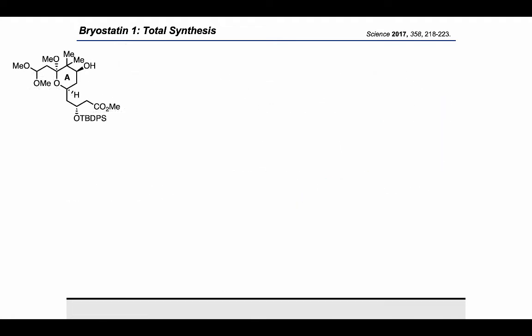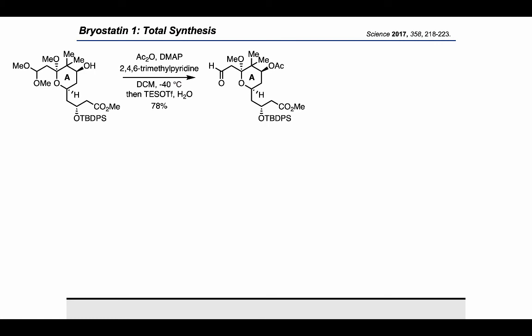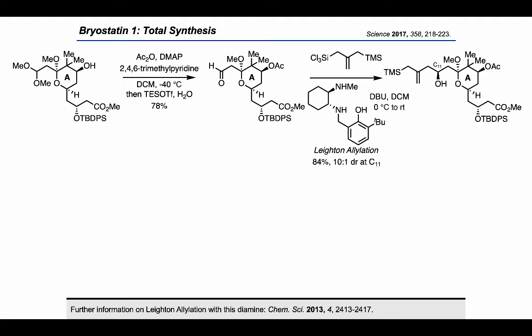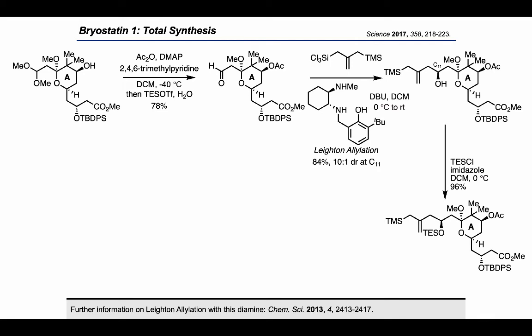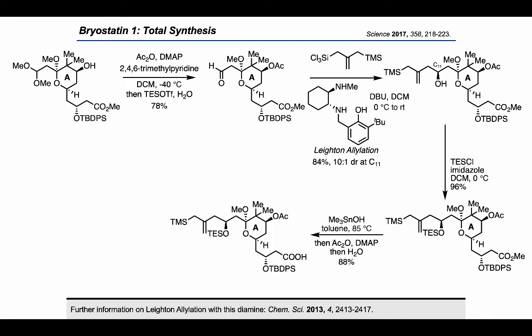Next, some protecting group manipulations: the secondary alcohol was acetylated, and the dimethyl acetal was deprotected to reveal the aldehyde. The authors then employed an allylation protocol developed by the Leighton group, using a chiral diaminophenol to control the stereochemistry of the secondary alcohol formed during the addition. Silylation with TES chloride followed by hydrolysis of the methyl ester to the carboxylic acid gave the completed A-ring fragment. The overall yield for the 10-step sequence was 13%.